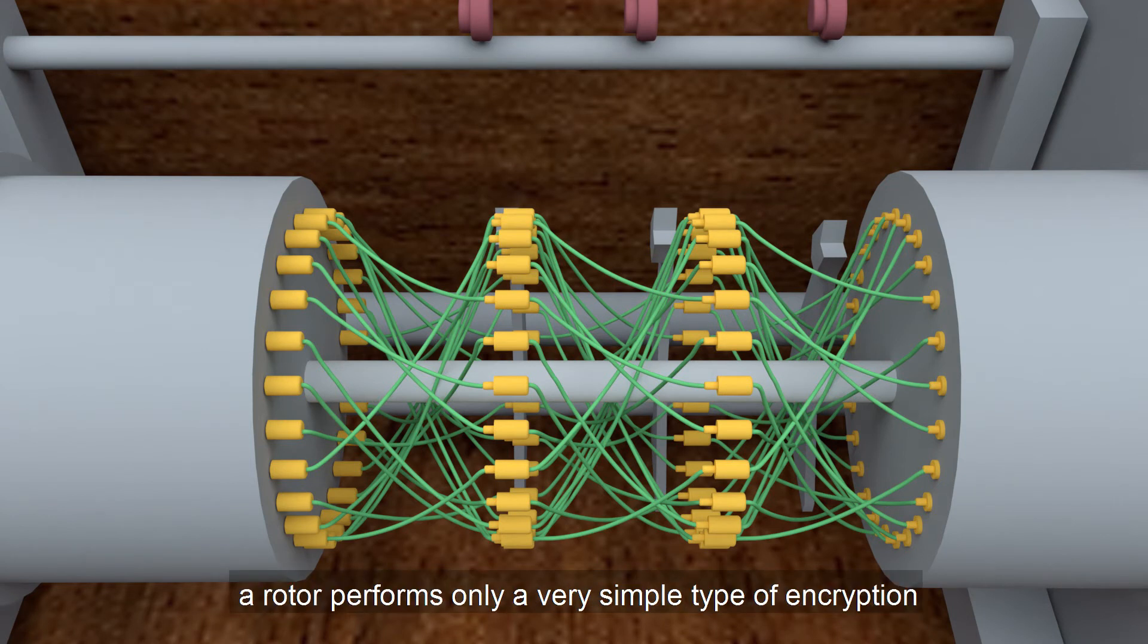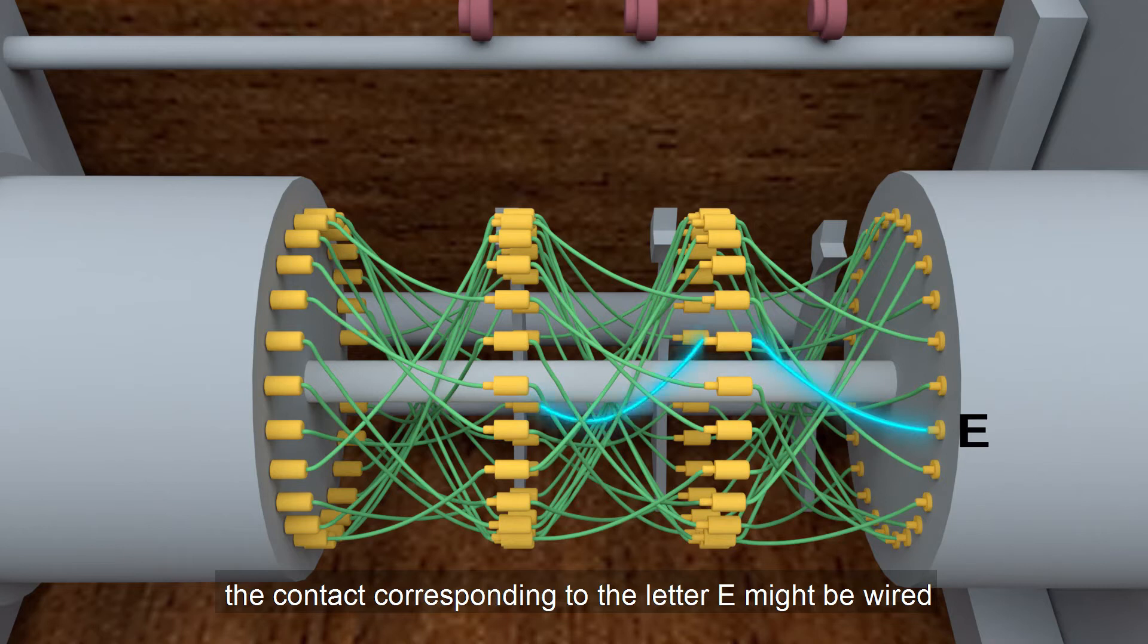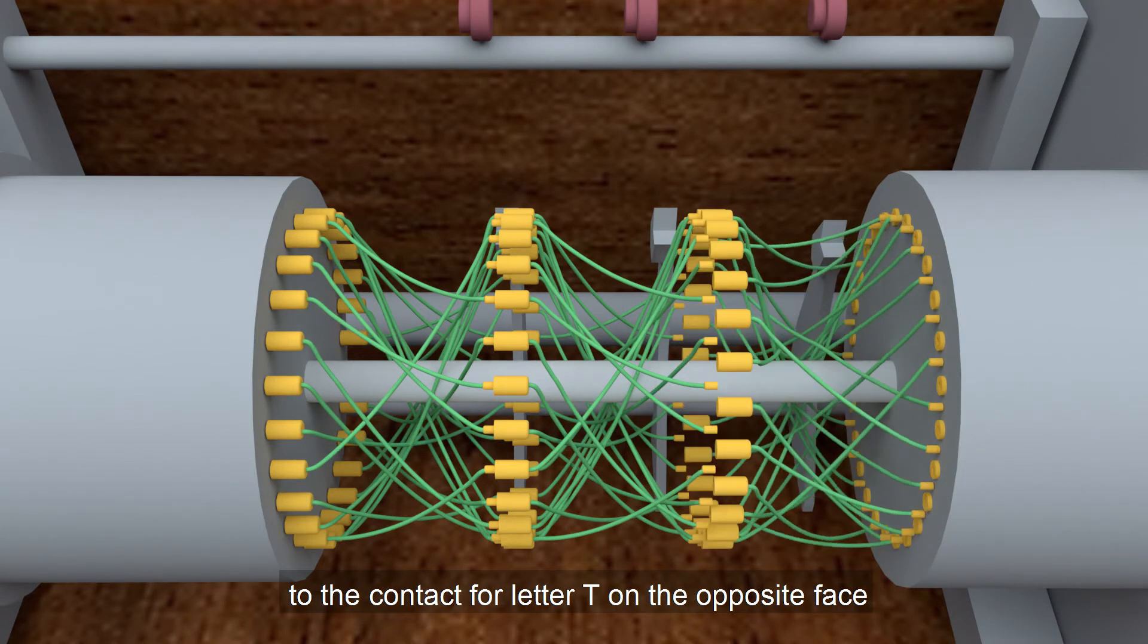By itself, a rotor performs only a very simple type of encryption, a simple substitution cipher. For example, the contact corresponding to the letter E might be wired to the contact for letter T on the opposite face, and so on.